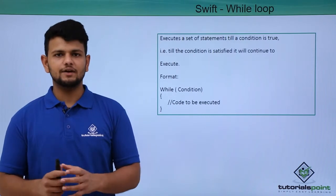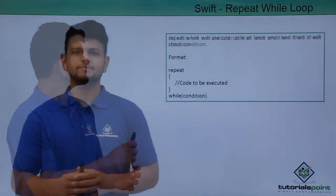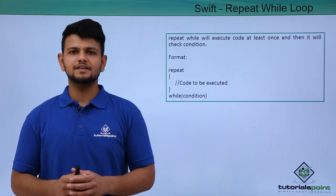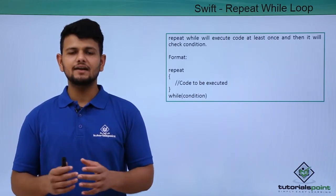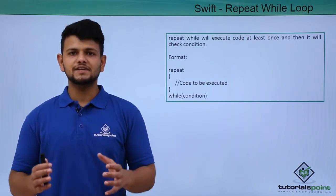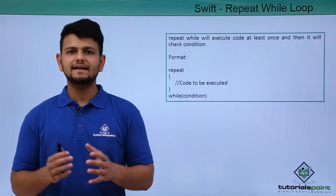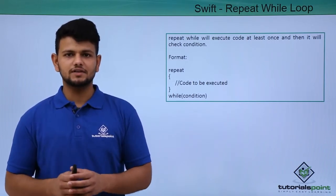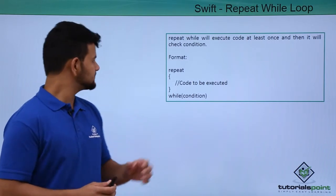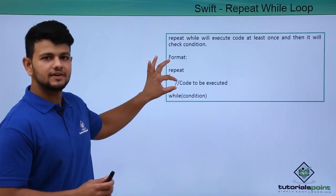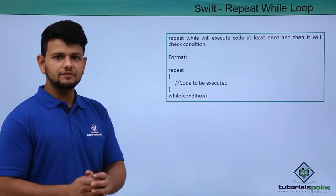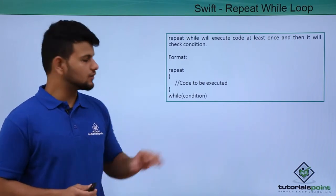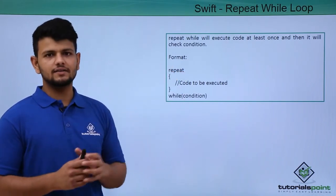Now let us see the repeat-while loop. In the repeat-while loop, a block of code executes until a condition is satisfied. The key difference is that the code statement is executed at least once before checking the condition. In the syntax, we first write the code to be executed, and then check the condition — so at least once the code will run before the condition is evaluated.